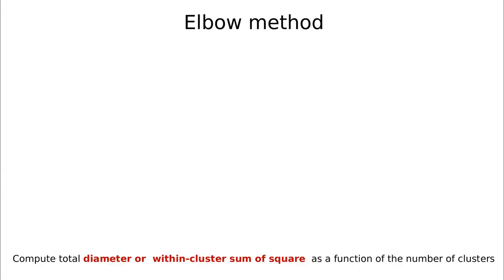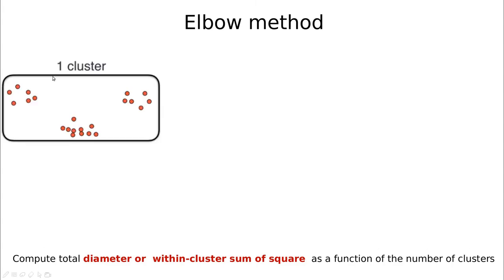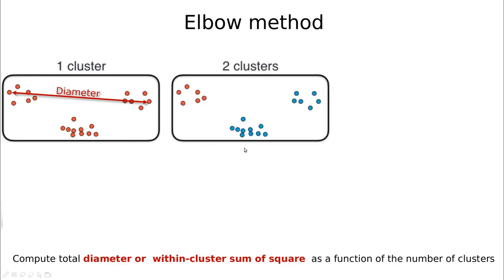The first method to decide the value of k is called the elbow method — it's really simple. Let me explain with an example. With one cluster, let's define diameter as the highest distance between two points in the cluster. So take the largest distance — this is the diameter. If you take two clusters, you have the diameter of the red cluster and the diameter of the blue cluster, and you take the highest one.